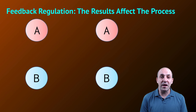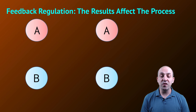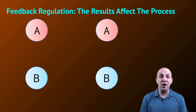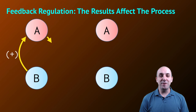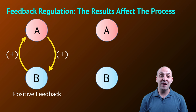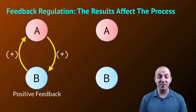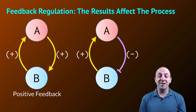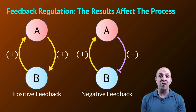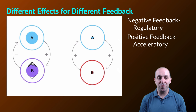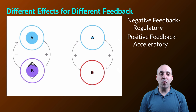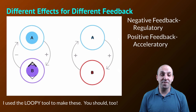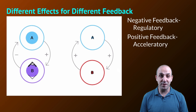The last type we're going to look at is feedback regulation. In feedback regulation, the results of a particular process affect that process. There are two different types. In a positive feedback relationship, the results of a process increase the occurrence of that process. The opposite is a negative feedback relationship, where the results of the process have a decreasing effect on the occurrence of that process. It's important to understand that only negative feedback is regulatory in nature.